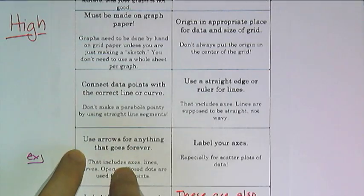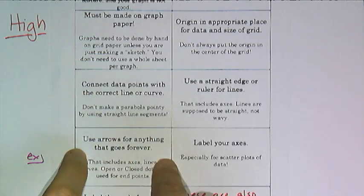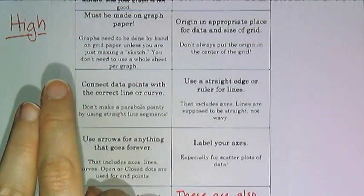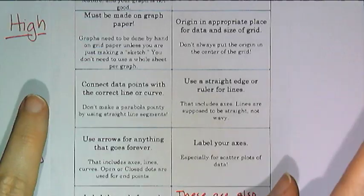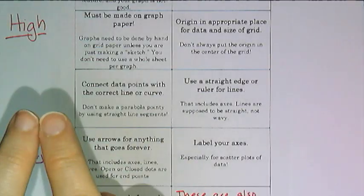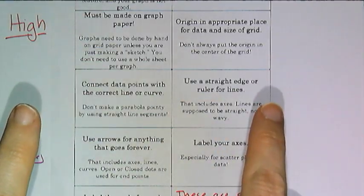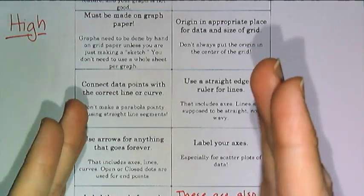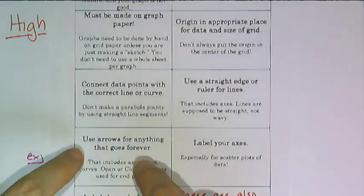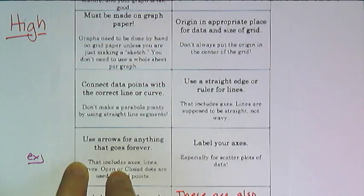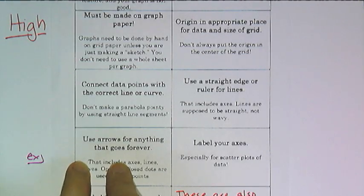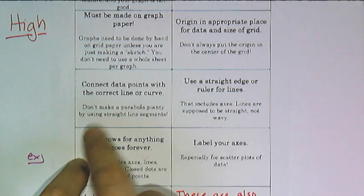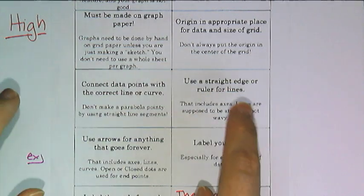Not all graphs go on forever. There are actually some graphs that start at a point and then go on forever, or some graphs that start at one point and end at another point, and they don't have arrows because they have distinct start and stop points. If you want to see an example of those graphs, you can look at the Algebra 2 investigating a function posters that I have up around the room — you can see there are some special graphs there that don't go on forever.